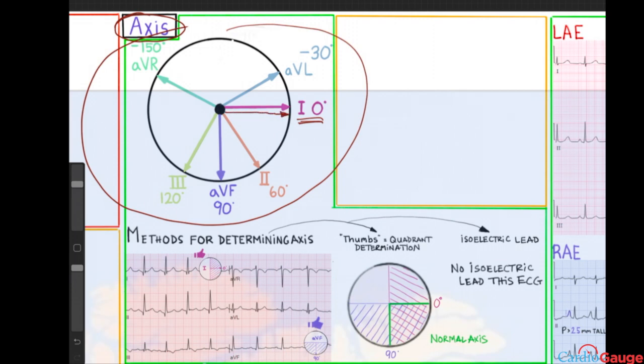So lead one, zero degrees. AVL minus 30. This would be an example of minus 90. There's no lead matching that. AVR is minus 150. Over here, lead three, 120. So that's defined in this direction because it's positive if you go all the way over here. And this would be minus 180 or plus 180. It could be either one. And then in this direction, the numbers are negative. And that's all by definition.